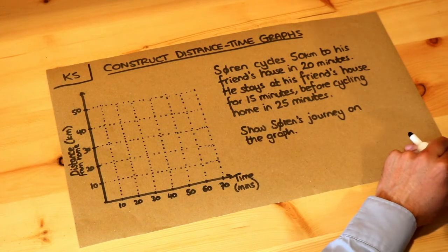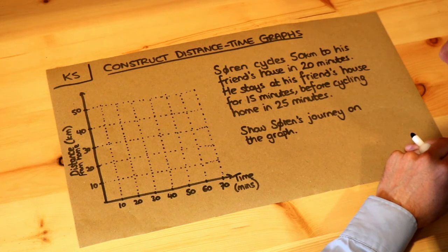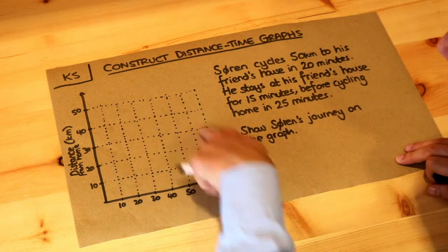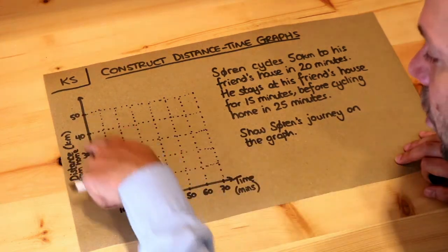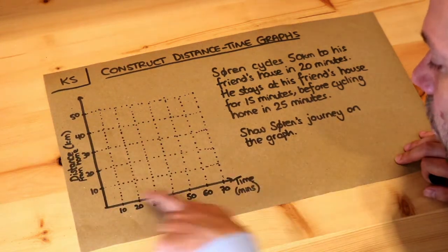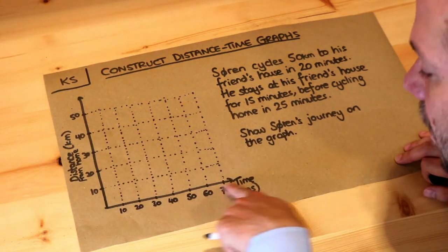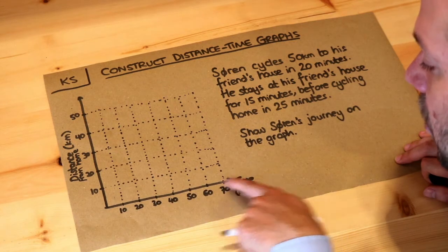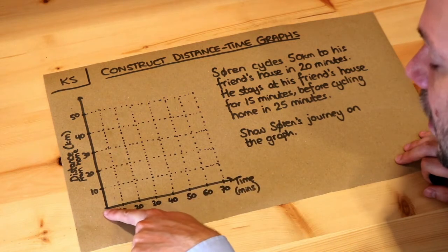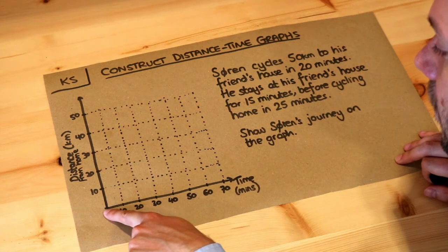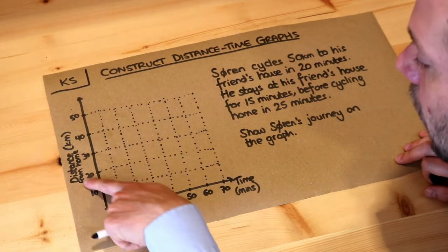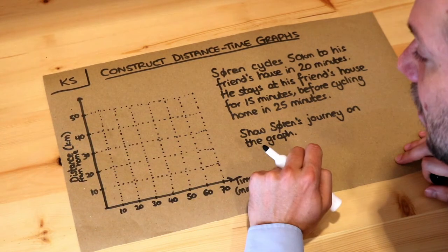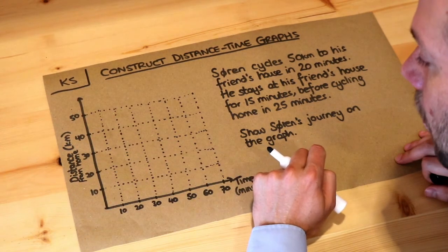Show Soren's journey on the graph. This is sometimes otherwise known as a travel graph. We've got two axes here — on the x-axis or horizontal axis we've got the time since he started moving, and on the y-axis or vertical axis we've got the distance he is from home.